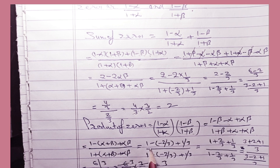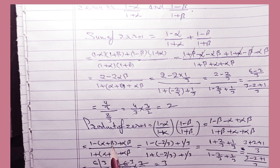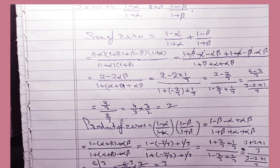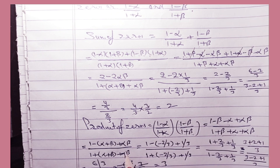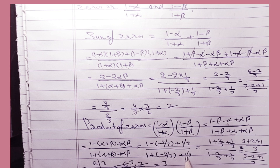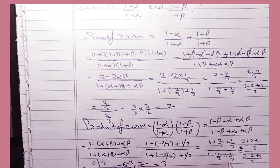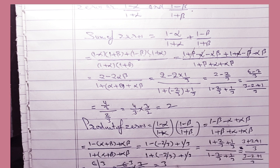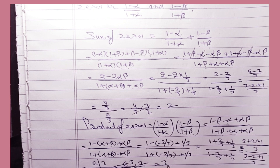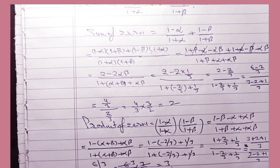Now substituting the values: α + β = -2/3 and αβ = 1/3. Numerator: 1 - (-2/3) + (1/3) = 1 + 2/3 + 1/3 = (3 + 2 + 1)/3 = 6/3 = 2... wait, solving: (3 + 2 + 1)/3 = 6/3. Denominator: 1 + (-2/3) + (1/3) = (3 - 2 + 1)/3 = 2/3. So the product of zeros = (6/3) ÷ (2/3) = 3.